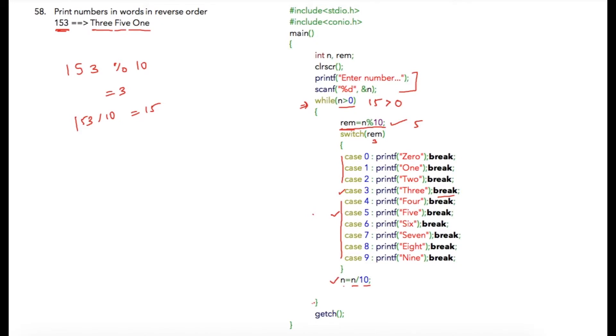Again the same condition will be checked. This time the condition is 1 greater than 0, which is true. And at this statement we will get remainder as 1, because 1 modulus 10 is 1. Then inside of switch case, 1 will be printed.